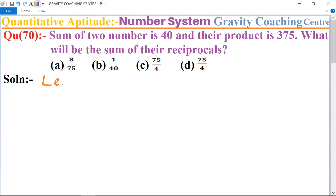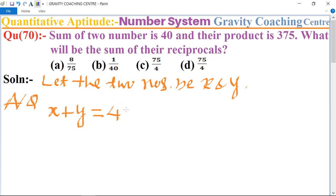In this question, first of all we let the two numbers be x and y. According to the question, the sum of two numbers is 40, so x plus y equal to 40. And their product xy equal to 375.